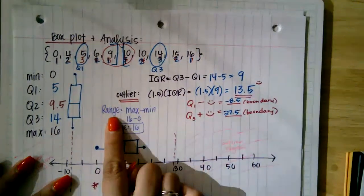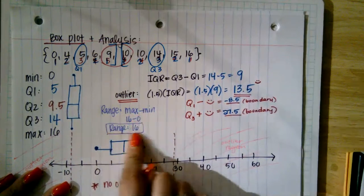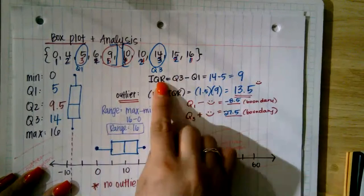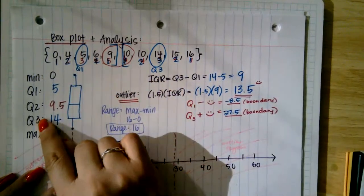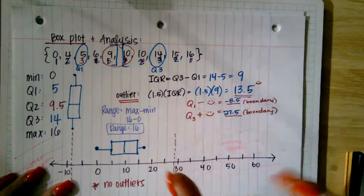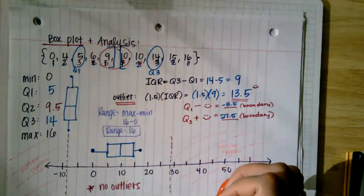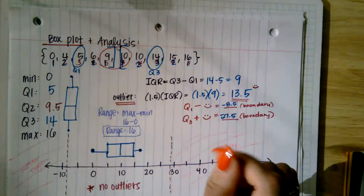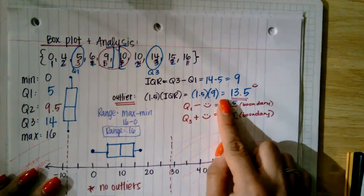The range tells me how far apart my maximum and minimum are: 16 minus zero gives a range of 16 units. Now the interquartile range is the range of the middle 50% of data: Q3 minus Q1 equals 14 minus five, which is nine. So the middle 50% of my data spans nine units.